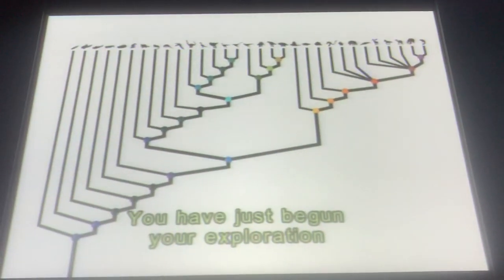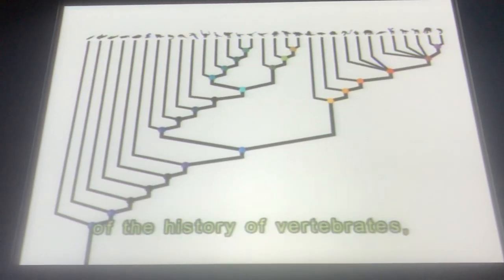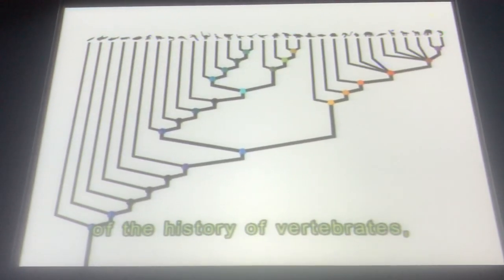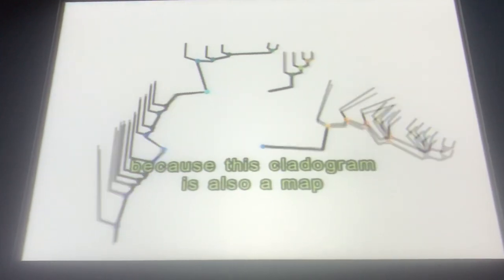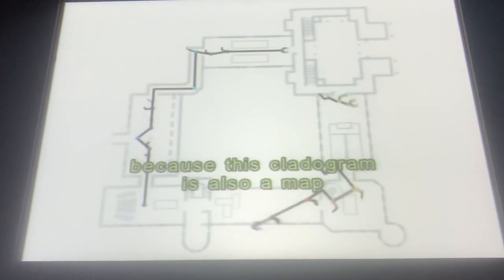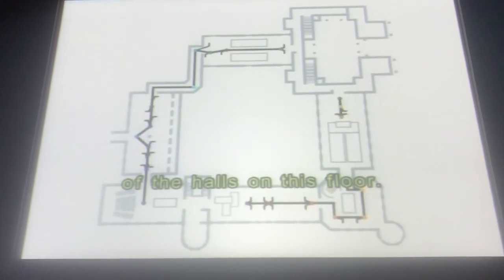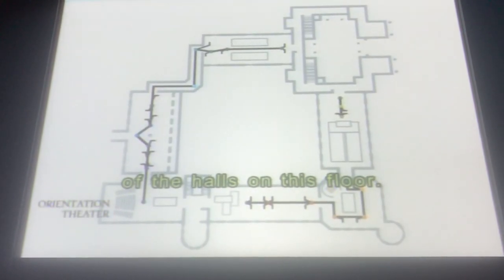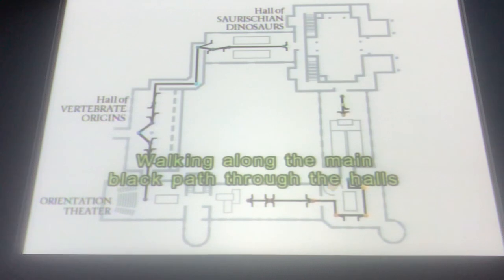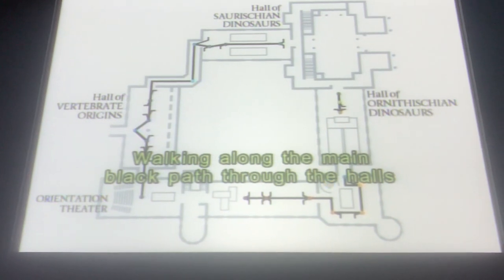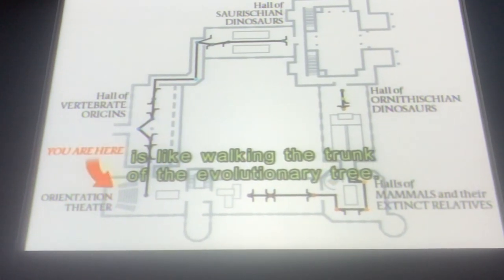You have just begun your exploration of the history of vertebrates, because this cladogram is also a map of the halls on this floor. Walking along the main black path through the halls is like walking the trunk of the evolutionary tree.